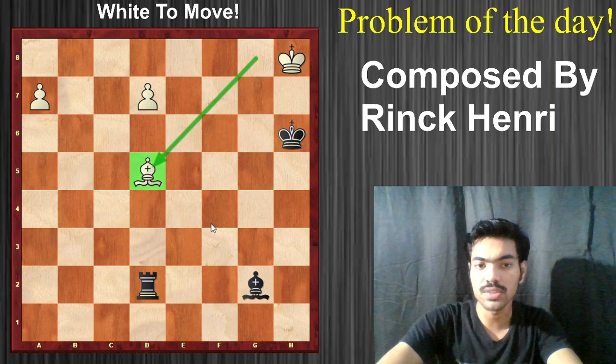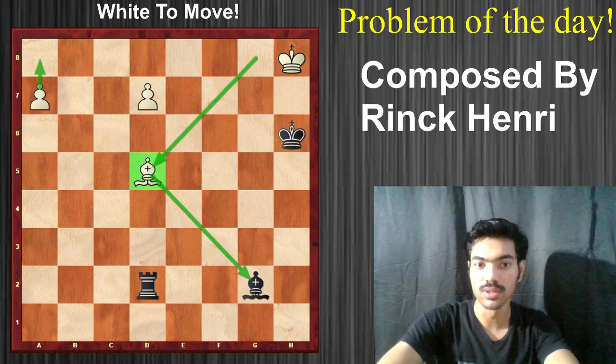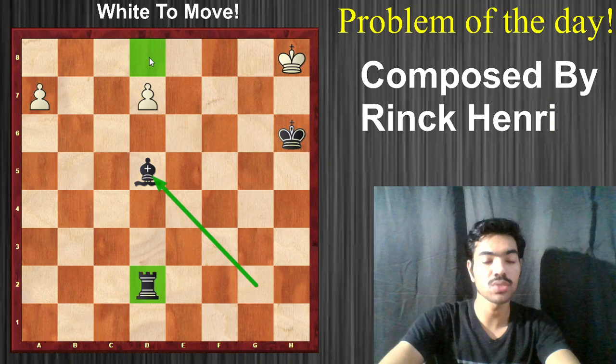The move that white should play here is bishop to b5. This is a great interference move. What is the threat? White obviously wants to promote the pawn, and at the same time he's threatening to first capture the bishop and then promote the pawn — that will be incredibly powerful. So white has some big threats and black has to deal with them.